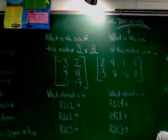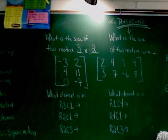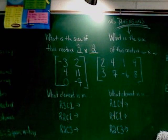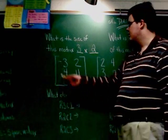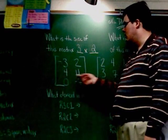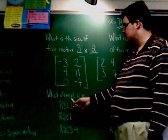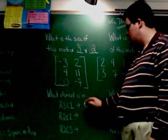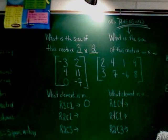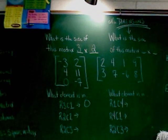Then at the bottom, they ask us what element is in R3C1, R2C2, R2C3. R stands for rows, C stands for column. So if I say R3C1, I mean what number is in row 3, column 1? That's all that means. So for R3C1, the third row is this one here. The first column is this one here. And they meet at 0. So 0 is in R3C1.